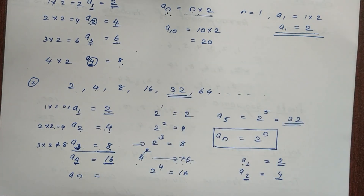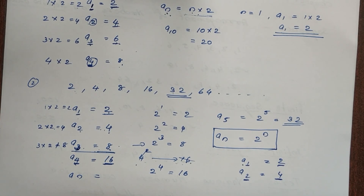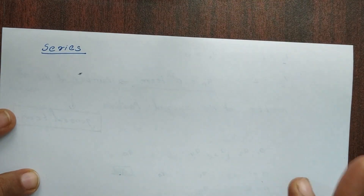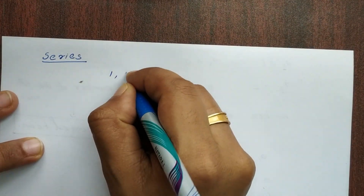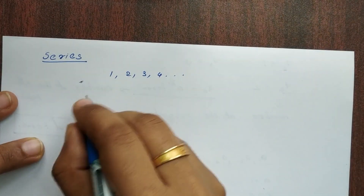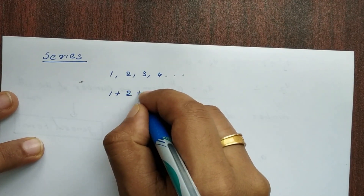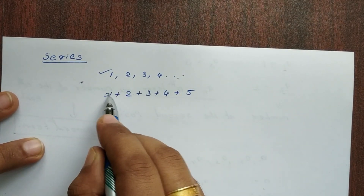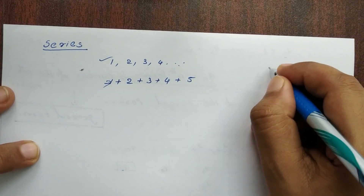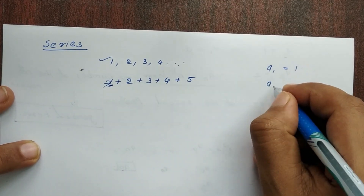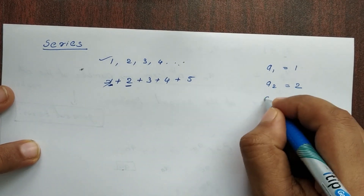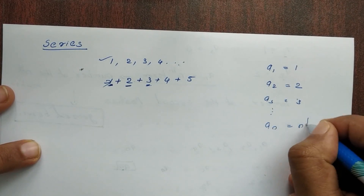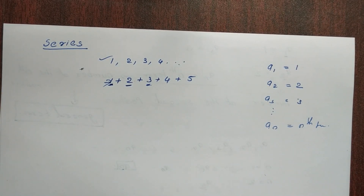Now we have the concept of a series. If we sum a sequence, we get a series. For example, the sequence 1, 2, 3, 4 gives the series 1 + 2 + 3 + 4. In a series, a1 is the first term, a2 is the second term, a3 is the third term, up to an, the general term.